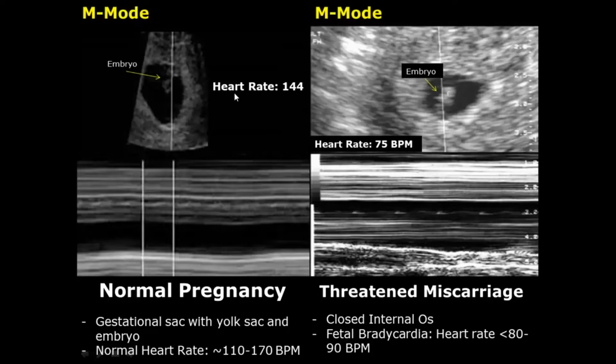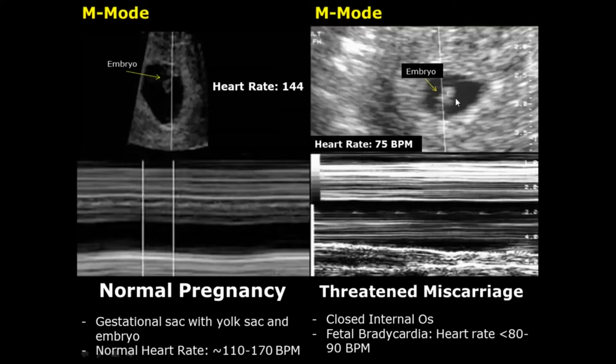Here the heart rate is 144 beats per minute, which is within normal range. A miscarriage is the natural termination of pregnancy before 20 weeks. The first type is the threatened miscarriage. One feature is fetal bradycardia — the heart rate will be below 80 or 90 beats per minute; in this image it is 75 beats per minute. This feature is just a suspicion and not a confirmation that the pregnancy has failed.